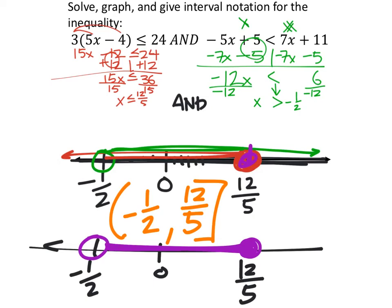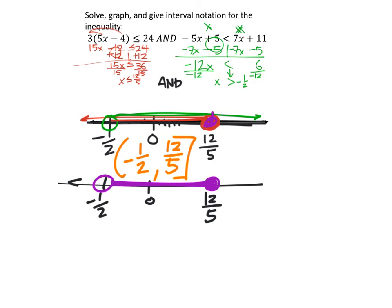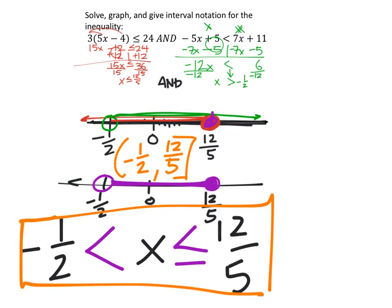The 'and' statement communicates we're looking for the intersection of red and green. Another way to write it — the more formal compound inequality form — is to sandwich x between the two values: -1/2 < x ≤ 12/5. Negative one half is excluded so we use strict less-than; 12/5 is included so we get the 'less than or equal to' symbol.